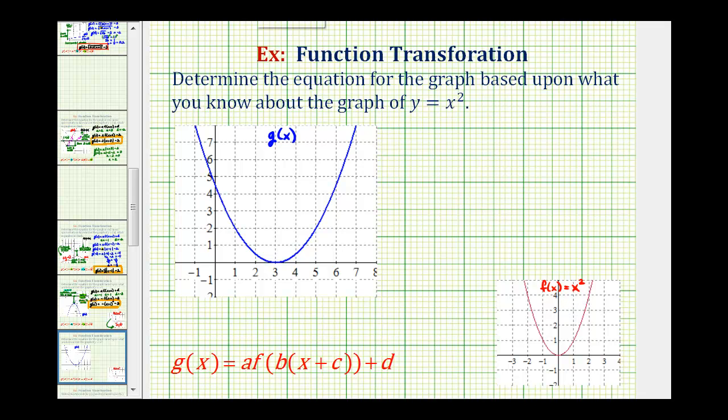So the first step is to determine the transformation that has occurred to form the blue graph. It may be a little challenging to see, but if we look at the red graph and the blue graph, the blue graph is wider than the red graph, which means the red graph has either been vertically compressed or horizontally stretched to form the blue graph. It doesn't matter which of these transformations we use, but let's go ahead and select a vertical compression.